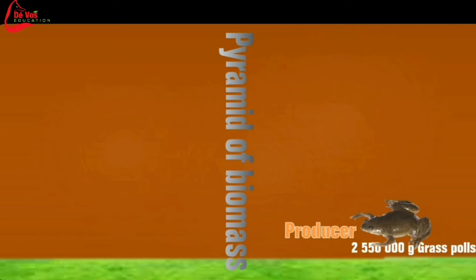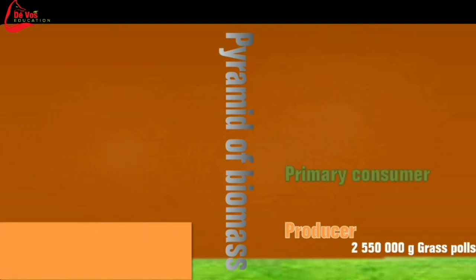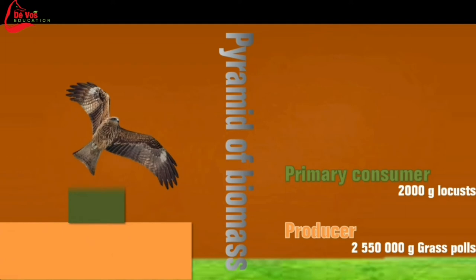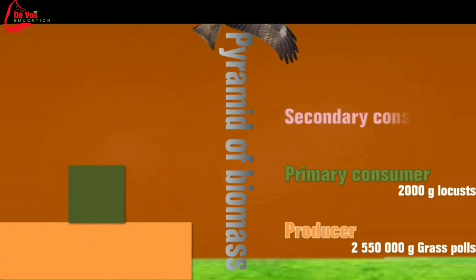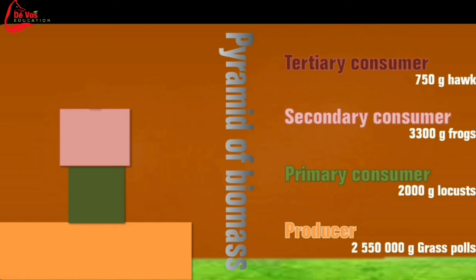The method that is more reliable than numbers is the pyramid of biomass. At least this one takes size into account. Biomass is the total mass of plants or animals of a species in a given place. Biomass can be unreliable, however, as there are various different amounts of water that can be stored in an organism. Dry mass is therefore measured instead, but to do this the organism must be killed. Both pyramids of biomass and numbers can be unreliable as they do not take into account seasonal differences in the amount of organisms present. Here we find 2,000 grams of locusts can sustain 3,300 grams of frogs, which can sustain a hawk of approximately 750 grams.